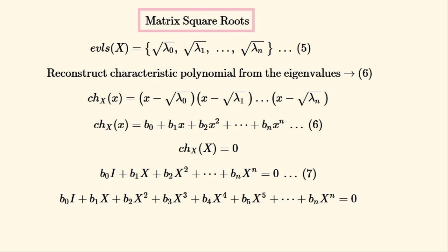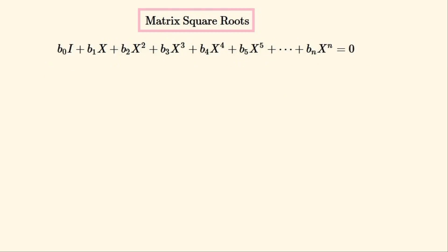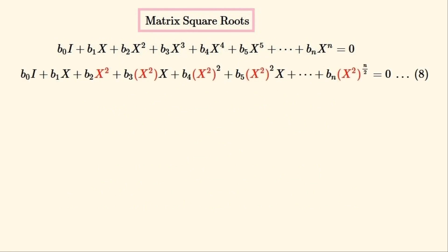We'll add more terms in this equation to more easily follow what we'll be doing next. We'll gather all of the X² terms together. We'll assume that n is an even number for the moment — this equation may be adapted for an odd value of n. I'll colour the X² terms in red to more easily follow them.